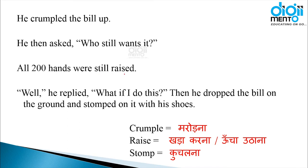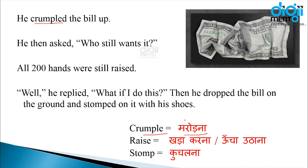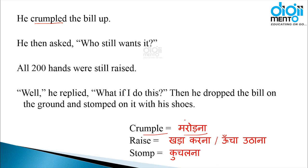All 200 hands were still raised. He replied, 'What if I do this?' He crumpled the bill up — एक word है हमारा: 'crumple'। Crumple का मतलब होता है मरोड़ना। जब आपके हाथ में कागज़ हो और आप उसे गुस्से में मरोड़ देते हैं — तो उसे 'crumple' कहते हैं। यहाँ बिल कागज़ से बना है इसलिए उसे मरोड़ना कहते हैं। So he crumpled the bill up — उसने उस बिल को मरोड़ दिया।